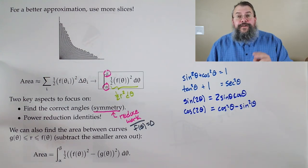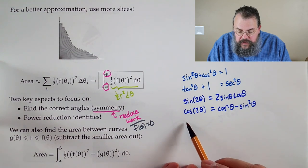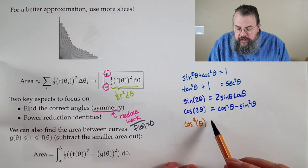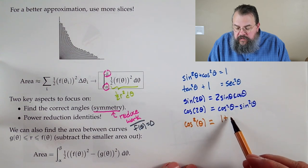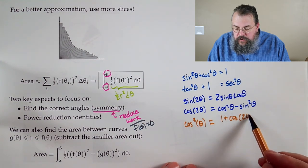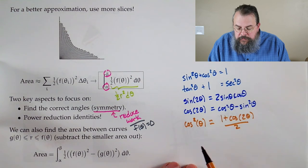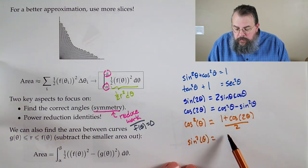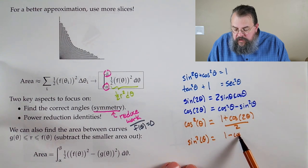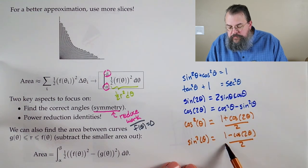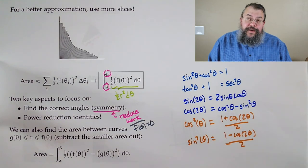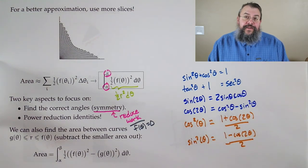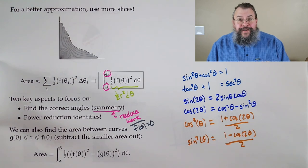Cosine squared is one plus cosine two theta over two. And sine squared is one minus cosine two theta over two. Of course, you can see, if you add cosine squared plus sine squared, the cosine two theta's cancel, you end up with one. That's a good check.